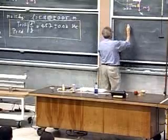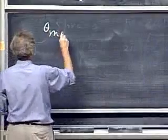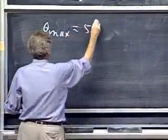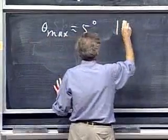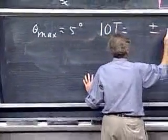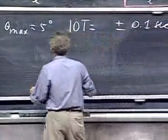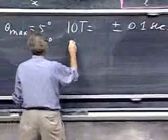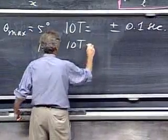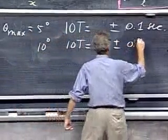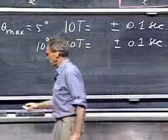So I'm going to get at an angle theta maximum of roughly five degrees, I get 10T equals something plus or minus my reaction time, which is 0.1 of a second. And then I will do it from ten degrees, and I will do again 10T, and again my reaction time is not much better than 0.1 seconds.